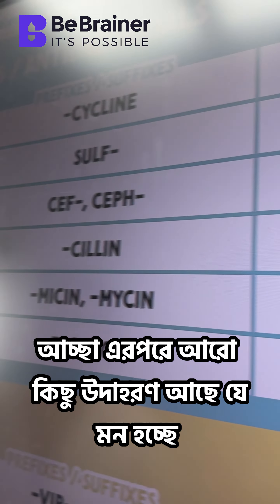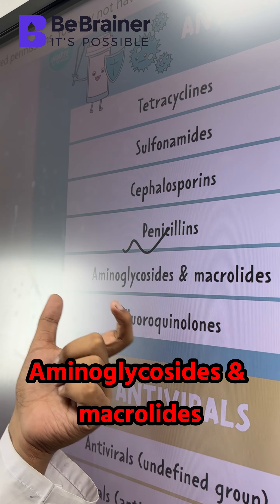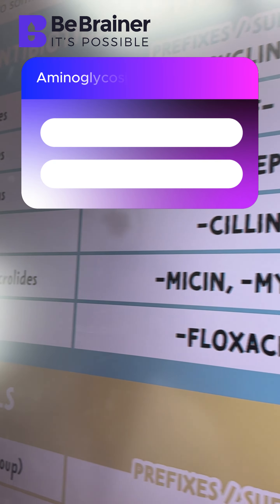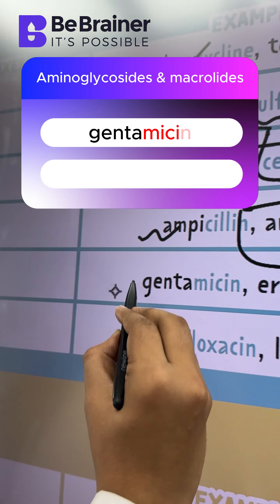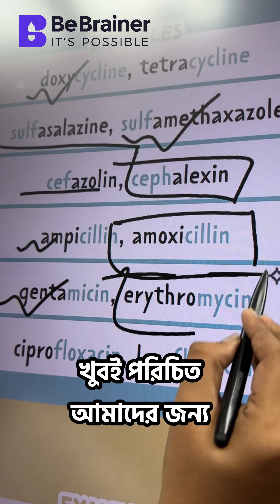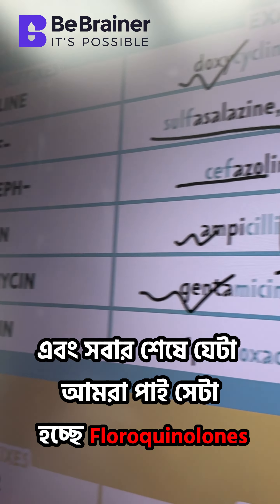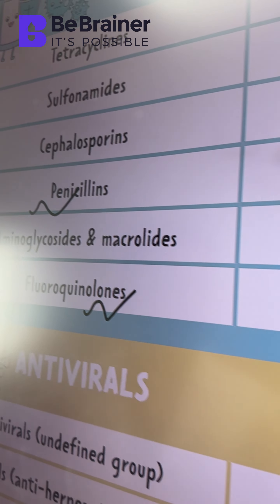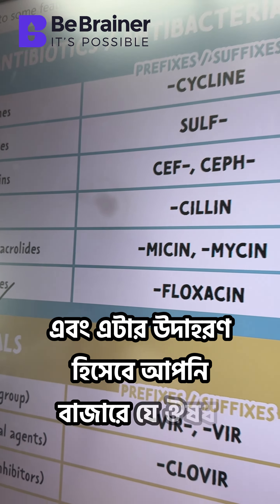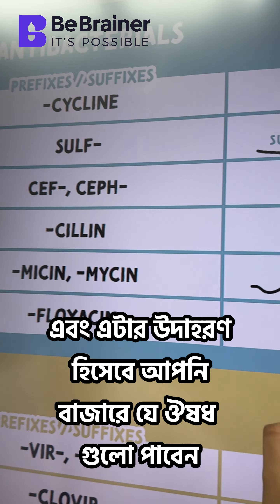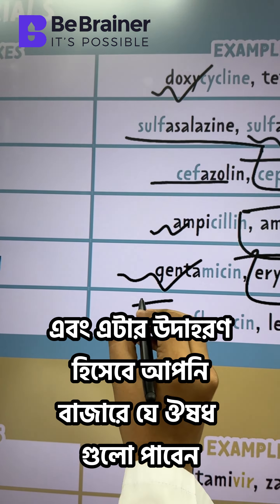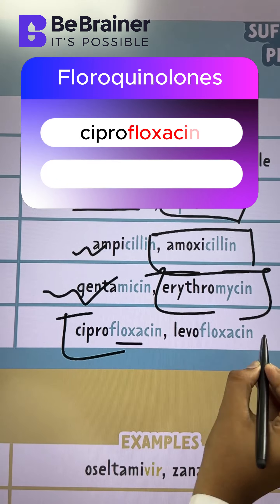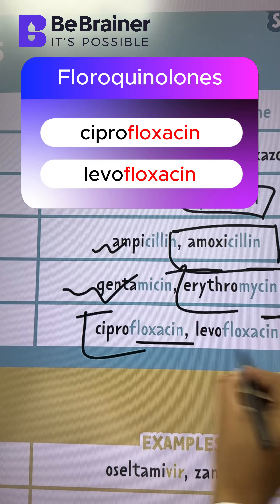We can also see the aminoglycoside group. There are certain aminoglycosides and fluoroquinolones that we can identify by their characteristic name suffixes.